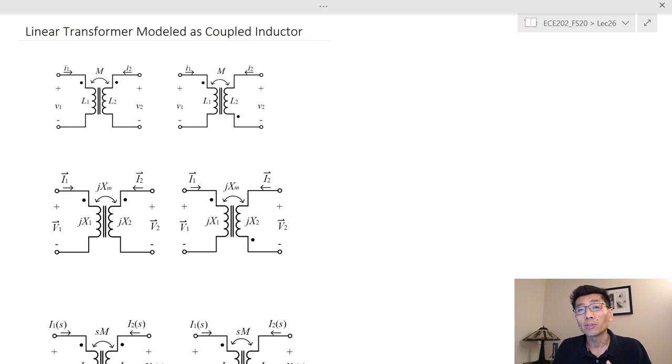Remember last time we talked about the ideal transformer, we had four different assumptions. We assume there's no leakage or perfect coupling and there is no resistance in the windings and also there is no core losses. Also the permeability of the core is infinity. So these are four things we assume.